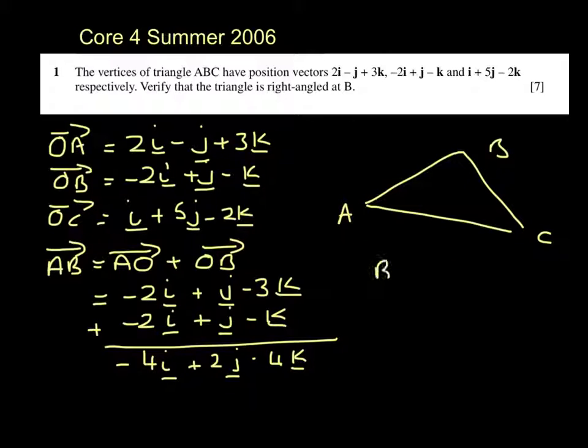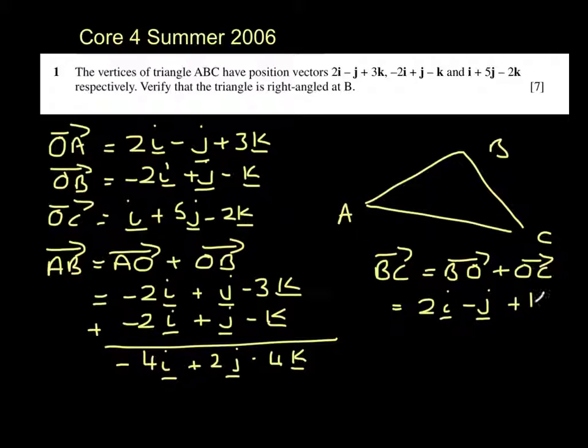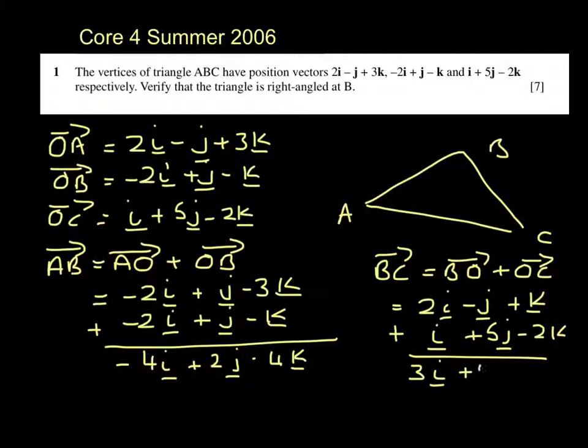I now repeat this for BC which will be B to O plus O to C so that's 2i minus j plus k, i, 5j minus 2k. I'm adding those together so that's 3i plus 4j minus k.